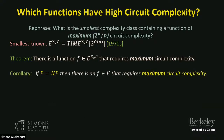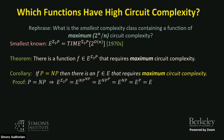As a corollary: if P equals NP, then there's a function in E that requires maximum circuit complexity. This follows by plugging in P=NP multiple times. This also relativizes, giving us an oracle relative to which E has maximum circuit complexity by choosing an oracle that makes P equal NP.